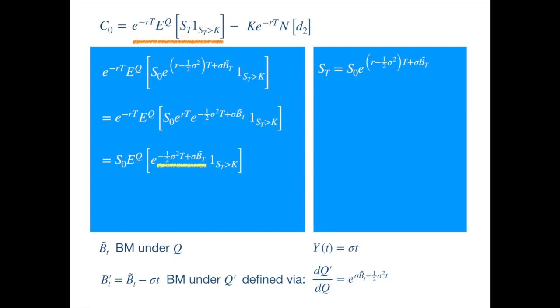So we replace it with the derivative to get... which is nothing but the expected value of the indicator function, but under the new measure.